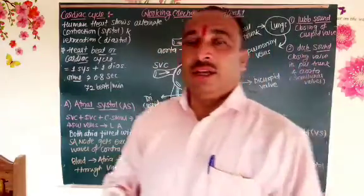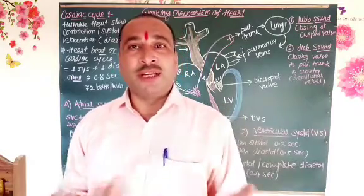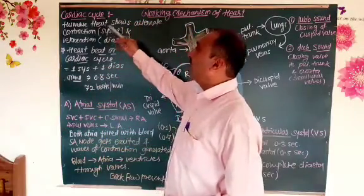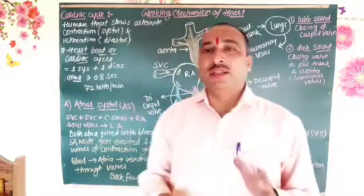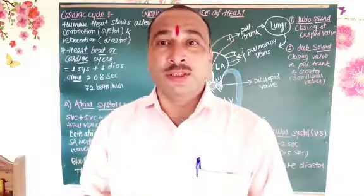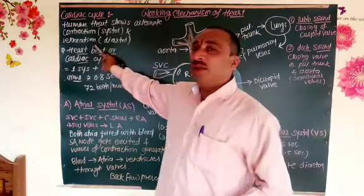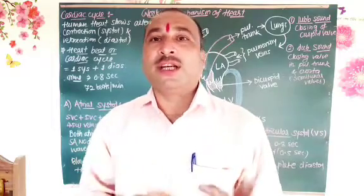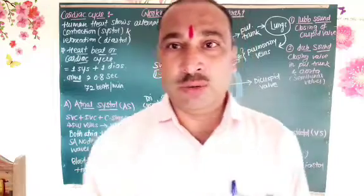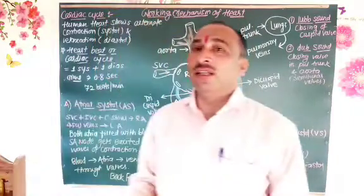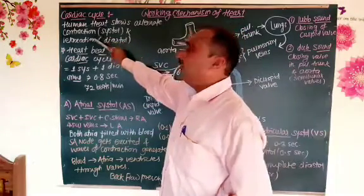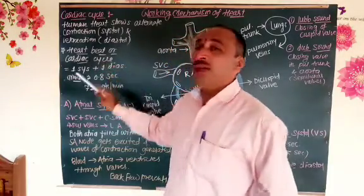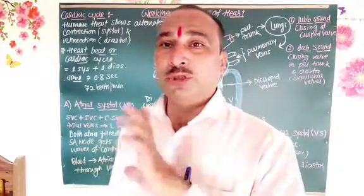The working mechanism of the heart involves the cardiac cycle. The human heart shows alternate contraction and relaxation. Contraction of the heart is called systole and relaxation of the heart is called diastole. One contraction and one relaxation — that is, one systole plus one diastole — is called either one cardiac cycle or one heartbeat.